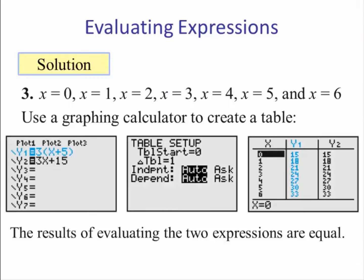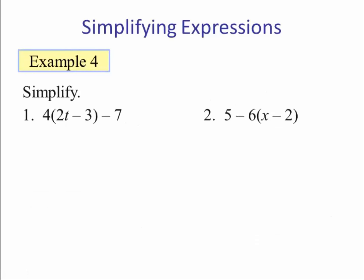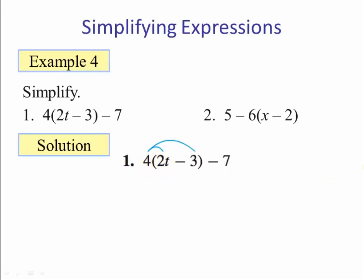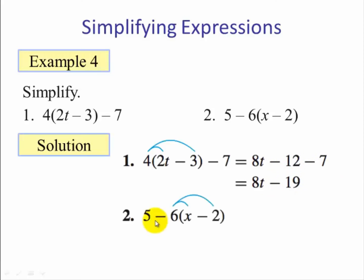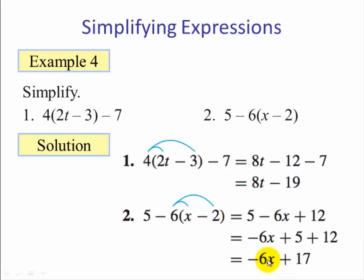The results of evaluating the two expressions are equal. Example four — simplify: four times the quantity two t minus three, minus seven. Apply the distributive property: four times two t is eight t, minus four times three which is twelve. Combining the constants, minus twelve minus seven gives minus nineteen, so the result is eight t minus nineteen. Number two: note it would be a mistake to compute five minus six first, since the six is multiplying. We treat this as negative six times x and negative six times negative two, giving negative six x plus twelve. Combining positive five and positive twelve gives negative six x plus seventeen.